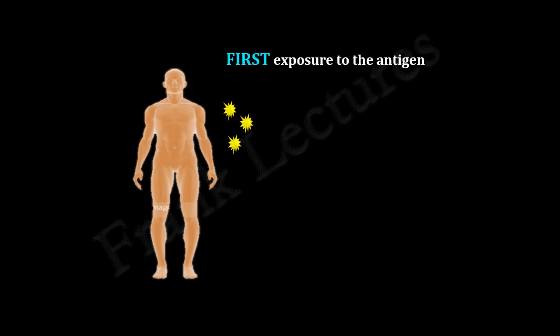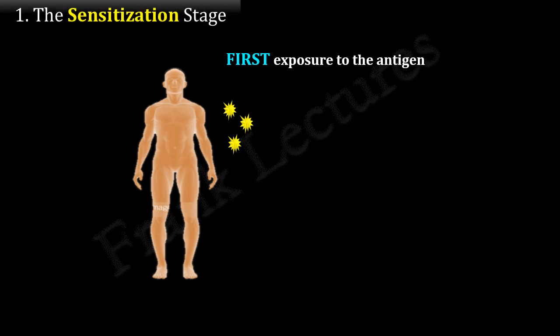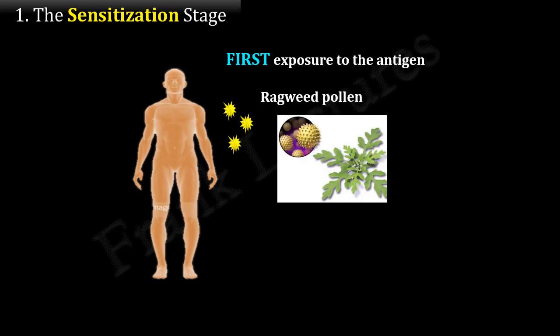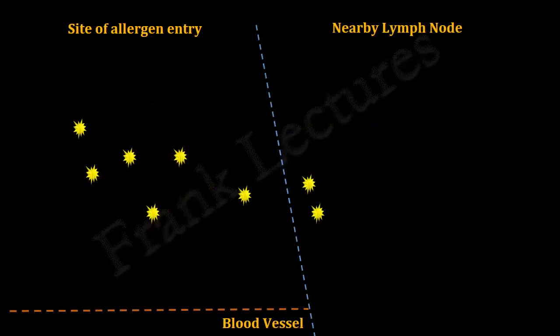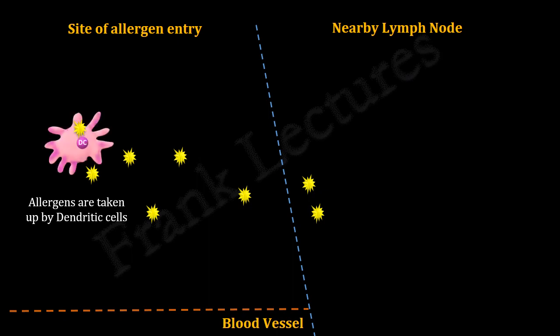Suppose an individual encounters the allergen for the first time — we are talking about the sensitization stage. Allergens may enter the body by inhalation, ingestion, or injection. For example, ragweed pollens are inhaled by an individual. Once an allergen enters the body, it is taken up by antigen-presenting cells such as dendritic cells. Dendritic cells process these antigens and display them as peptide-MHC complexes on their surface.